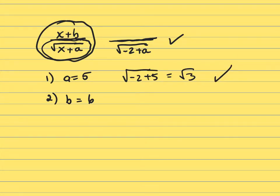And now, if B is 6, that's x plus 6 over square root of negative 2 plus A. This does not work because we don't know what A is.